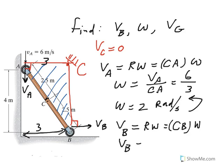So velocity of B would be CB, which is four meters, times two radians per second that I just determined. So that becomes eight meters per second. And you could see velocity of B is horizontal and to the right.